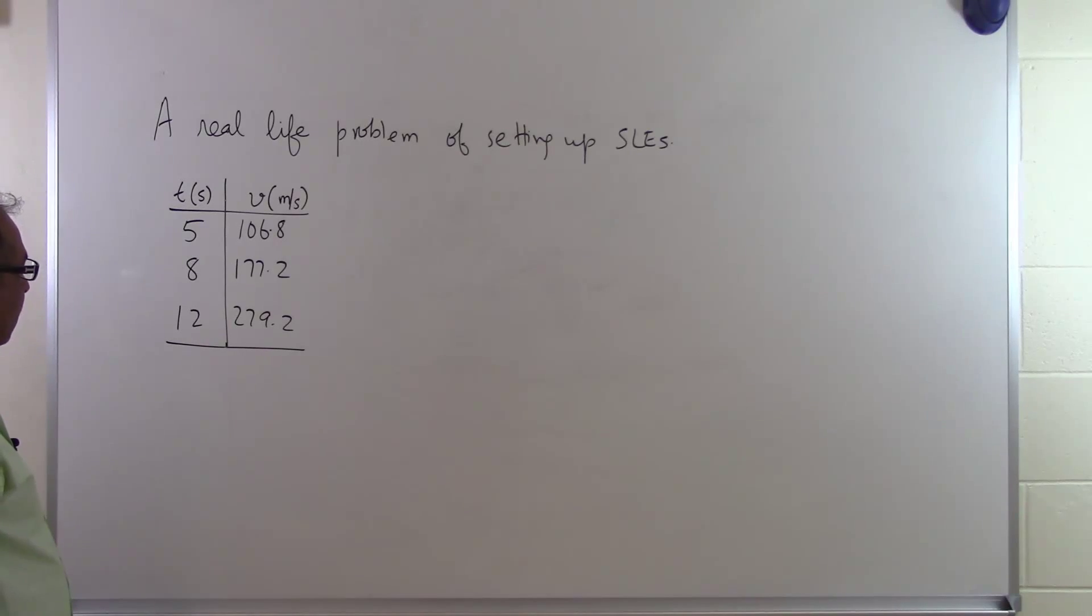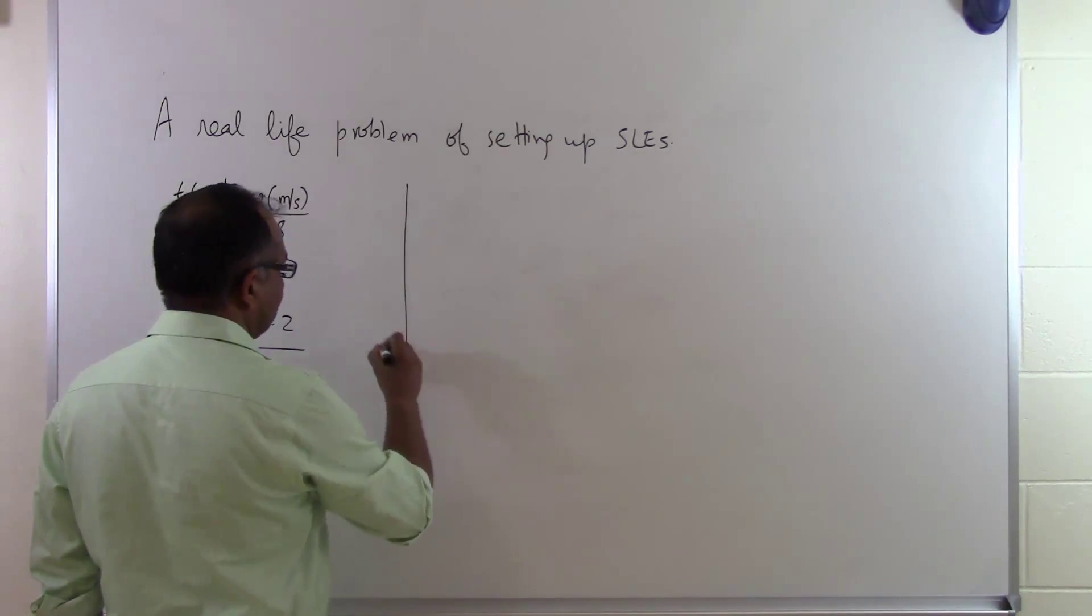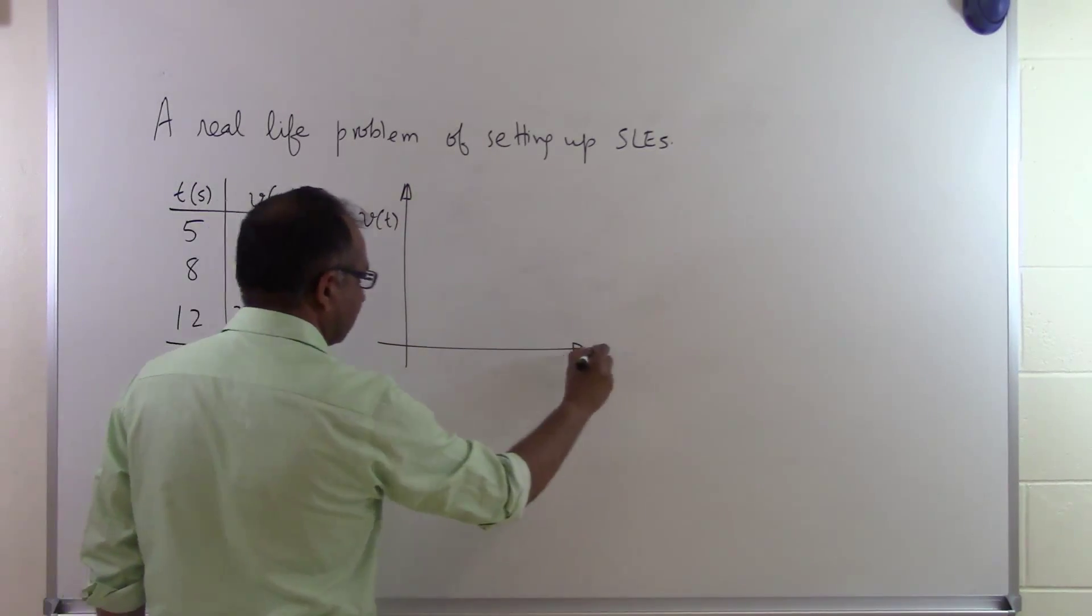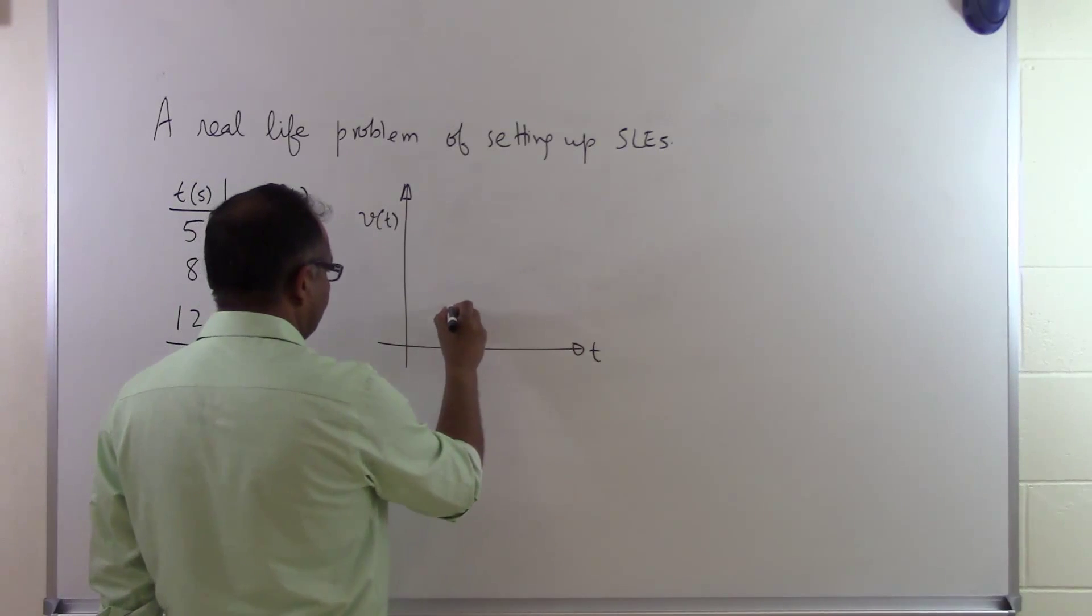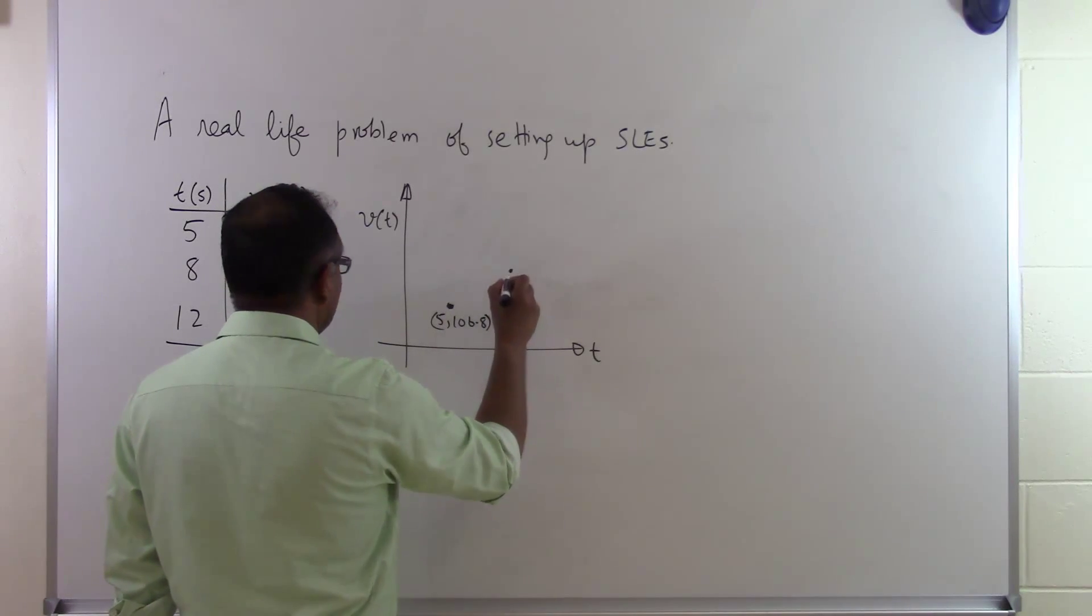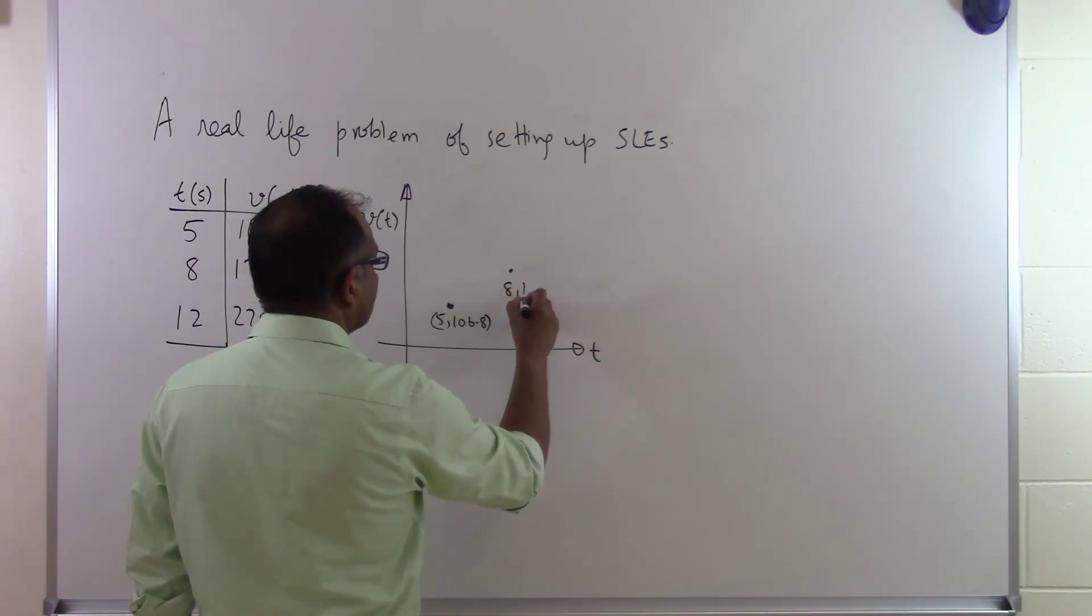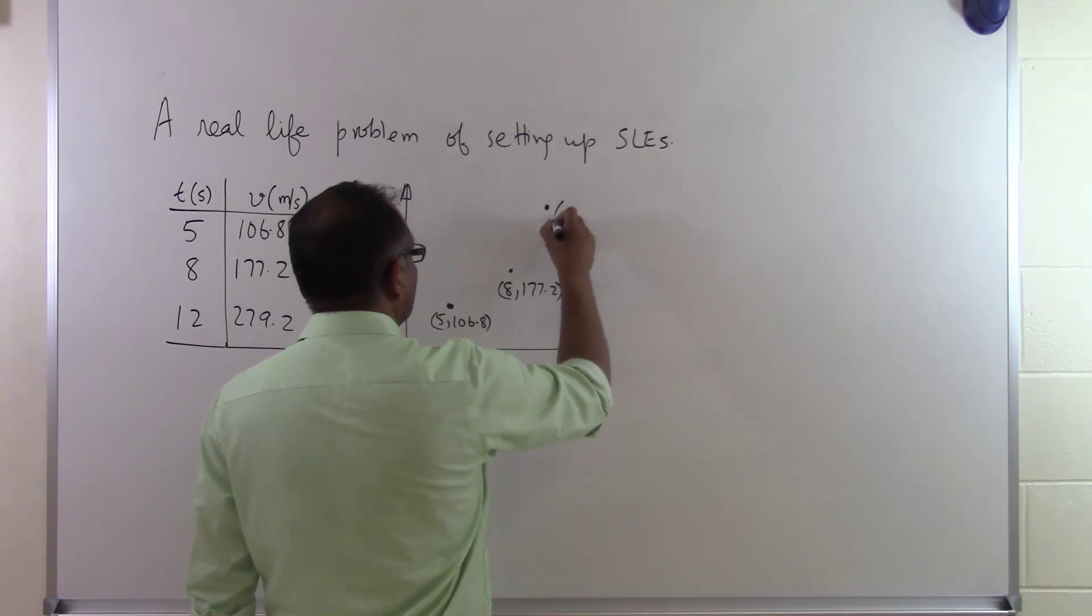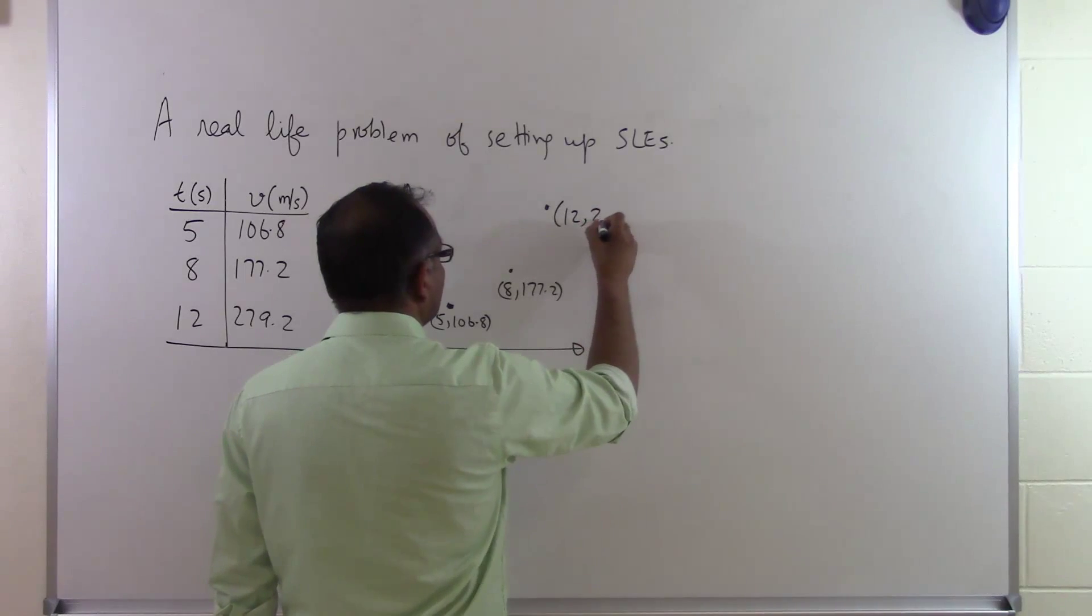But let's suppose somebody says you got to do better than a straight line. If we plot these points on a piece of graph paper with velocity here and time here, velocity at 5 is 106.8, at 8 it is 177.2, and at 12 it is 279.2.